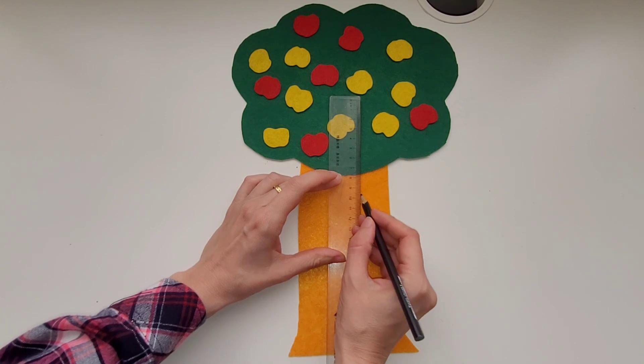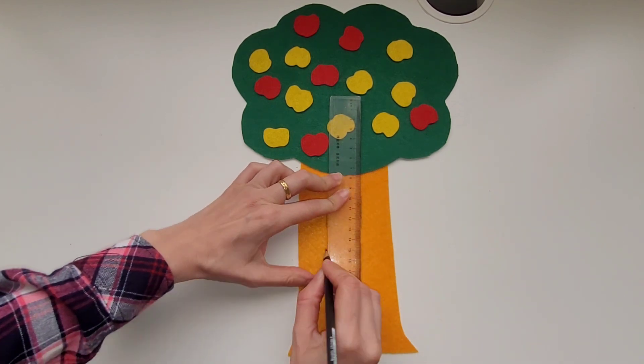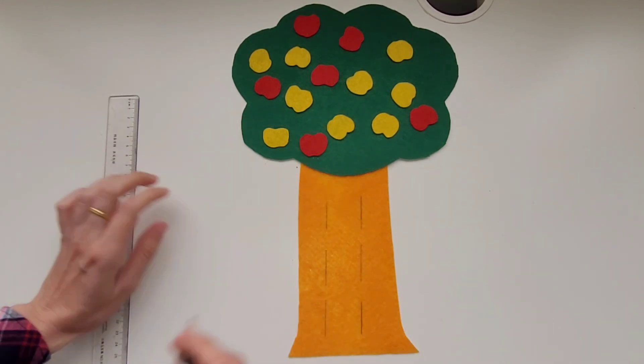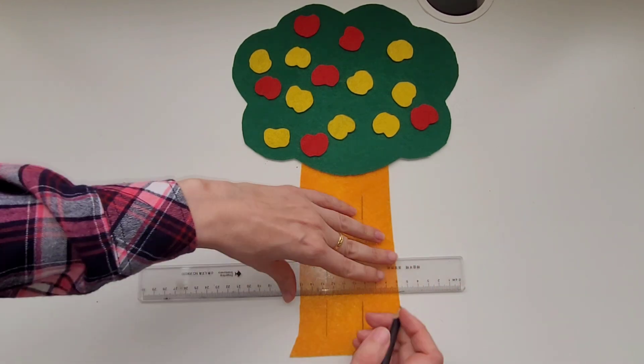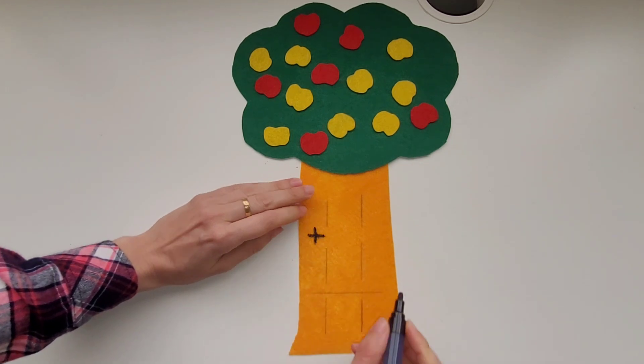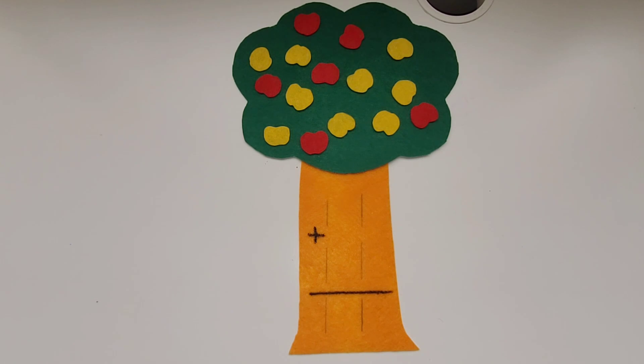Now that I have red and yellow apples I'm going to use a ruler to draw some lines on the trunk. I'm going to draw three sets of parallel lines on the trunk. They're going to be far enough apart that you can write a number in the middle. And then I'm going to write the addition sign and then a line so I can write the answer under it.